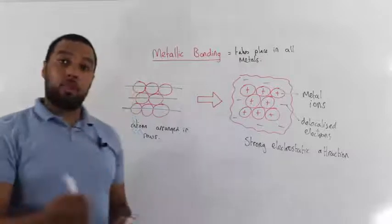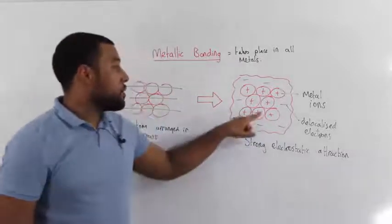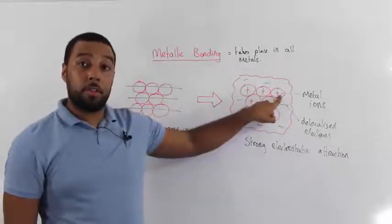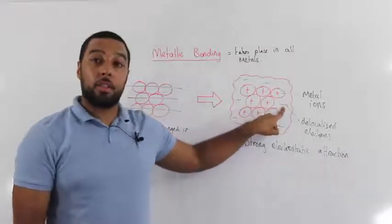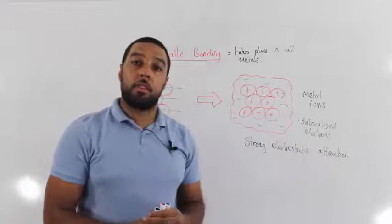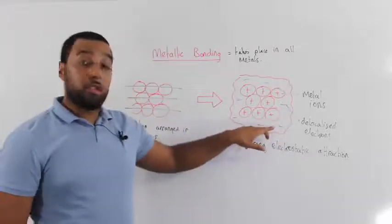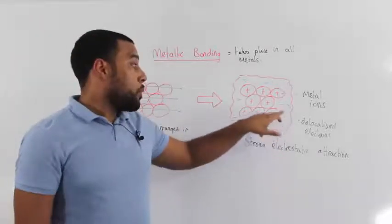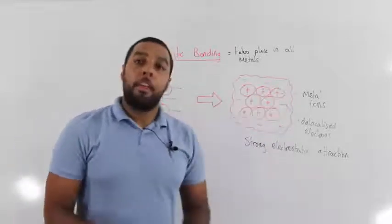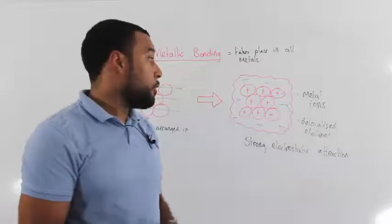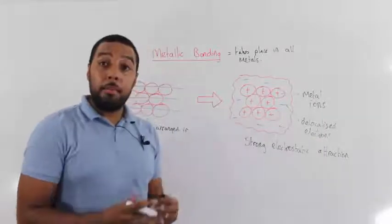We get this strong electrostatic attraction because the metal ions are positively charged and the delocalized electrons are negatively charged, and we know that opposites attract. And it's this strong electrostatic attraction between the delocalized electrons and the metal ions that acts like a glue for the metal, keeping it all together.